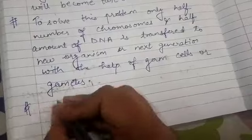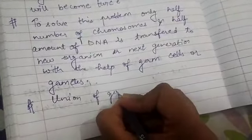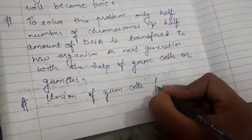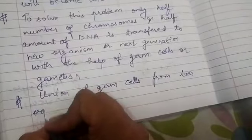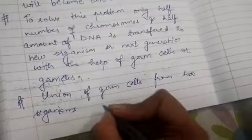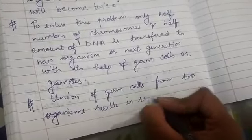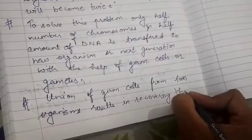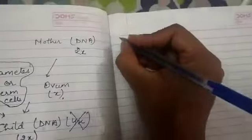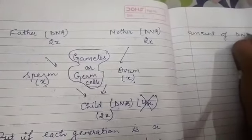The union of germ cells from two organisms results in recovering the amount of DNA. As you can see in the flowchart, 2x DNA is maintained — 2x stays as 2x. So when two germ cells meet, the amount of DNA is recovered back to 2x.